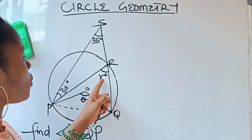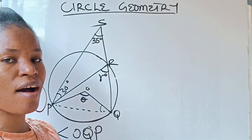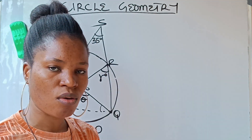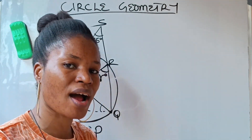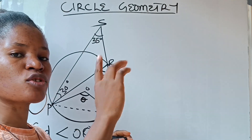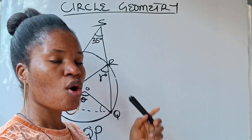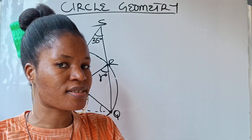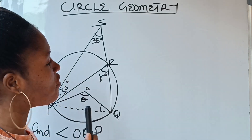First, you need to know that when you have a triangle, the exterior angle of a triangle equals the sum of the two opposite interior angles.